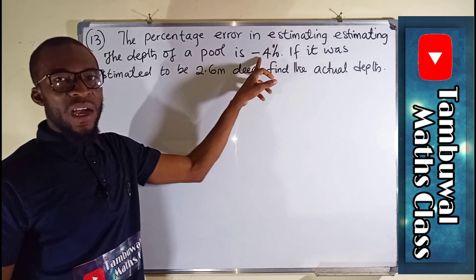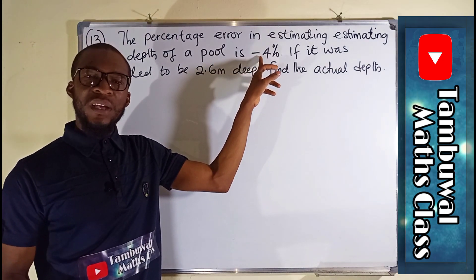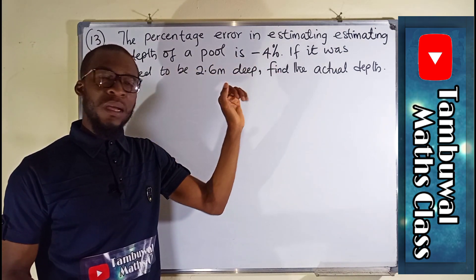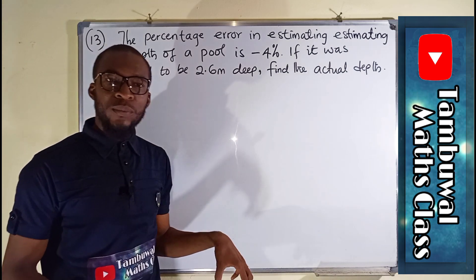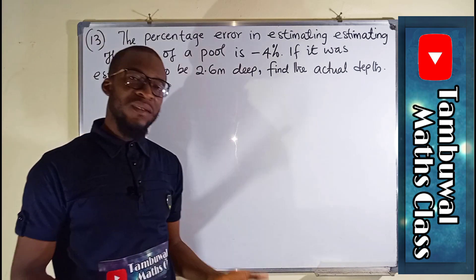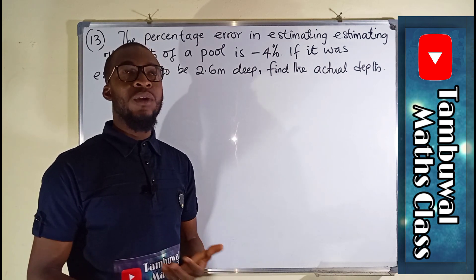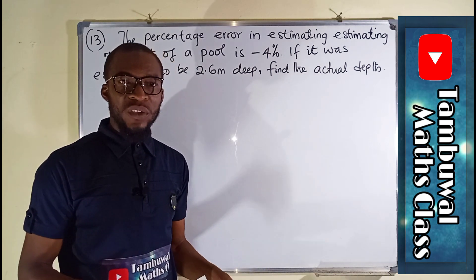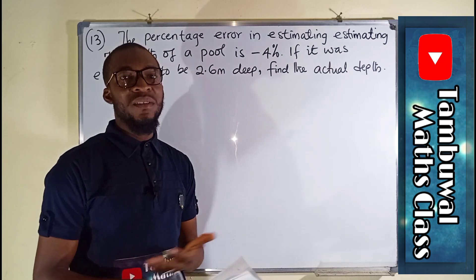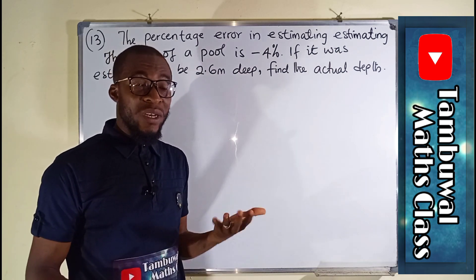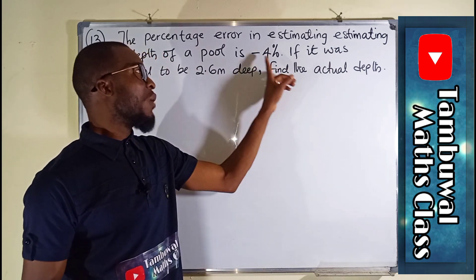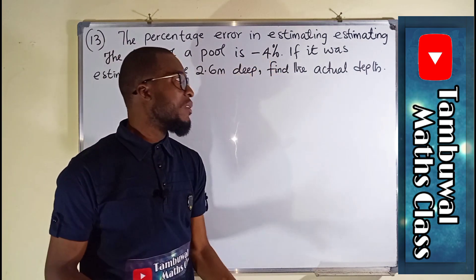Forget about this negative sign. What this negative sign is telling us is that the depth of the swimming pool was underestimated. So if the swimming pool were to be like 100 meters deep, it was measured around maybe 60 meters deep. It was underestimated. This is why we have negative 4%.